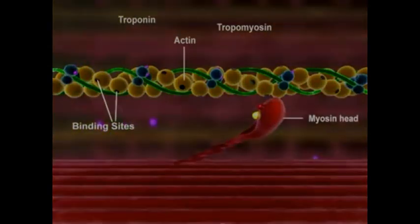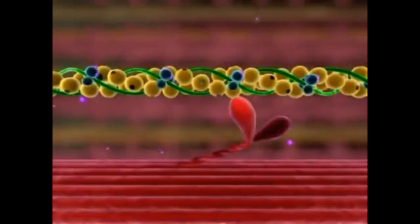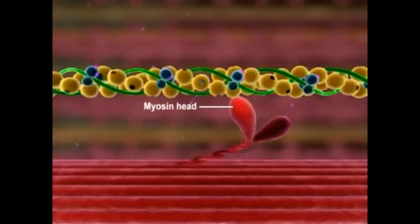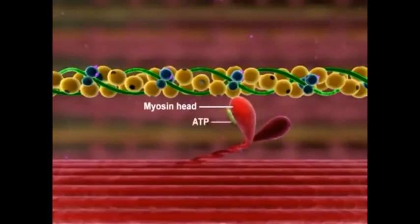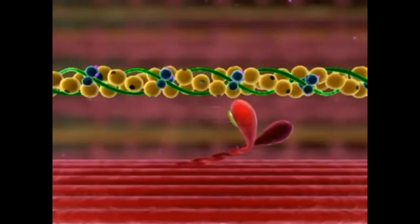Note that the myosin head must be activated before the cross-bridge cycle begins. This occurs when ATP binds to the myosin head and hydrolyzes to ADP and inorganic phosphate.